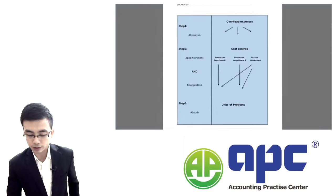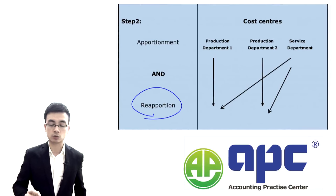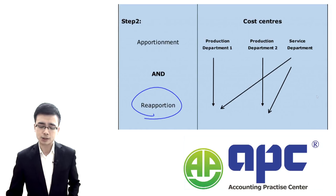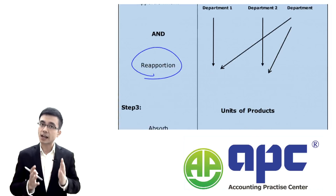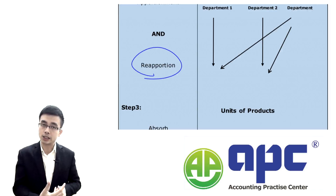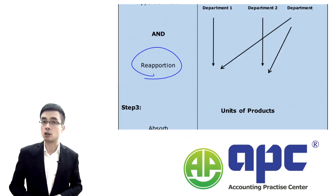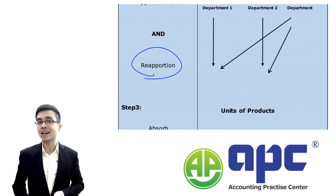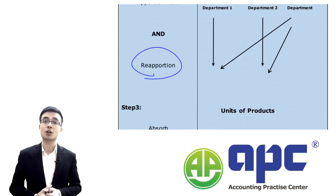On the next page you'll see a diagram of what we've done here, and we'll also cover the concept of reapportionment. In the next section, we'll detail the steps in much more depth — how to allocate, how to reapportion, and how to calculate the overhead absorption rate — as well as under- and over-absorption and commentary on absorption costing.